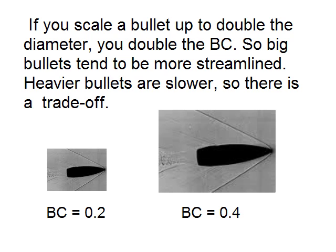An interesting fact: if you scale a bullet up to double the diameter, you double the BC. So if you have two bullets — one small and one big — that are exactly the same shape, the bigger one has a bigger BC. Double the size, double the BC, assuming everything else is the same. So big bullets tend to be more streamlined. That's why, if you hear about some new sniper record, it's not done with .223 — it tends to be done with .338 or .50 cal, something big.